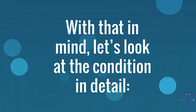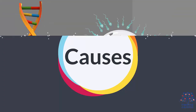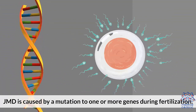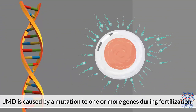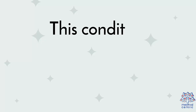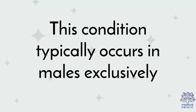With that in mind, let's look at the condition in detail. Causes: JMD is caused by a mutation to one or more genes during fertilization. First, X-linked retinoschisis, also known as XJR — this condition is caused due to mutations to the RS1 gene and typically occurs in males exclusively.